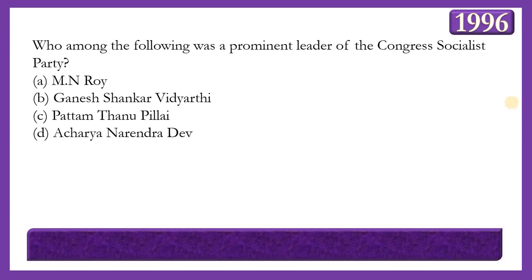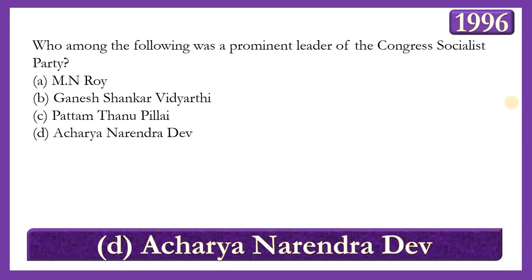Next question: Who among the following was a prominent leader of the Congress Socialist Party? Options: M.N. Roy, Ganesh Shankar Vidyarthi, Pattom Thanu Pillai, or Acharya Narendra Dev. The answer is option D — Acharya Narendra Dev — who, along with Minoo Masani and Jayaprakash Narayan, were pioneers of the Congress Socialist Party, formed in 1934 as a consequence of the failure of the civil disobedience movement.